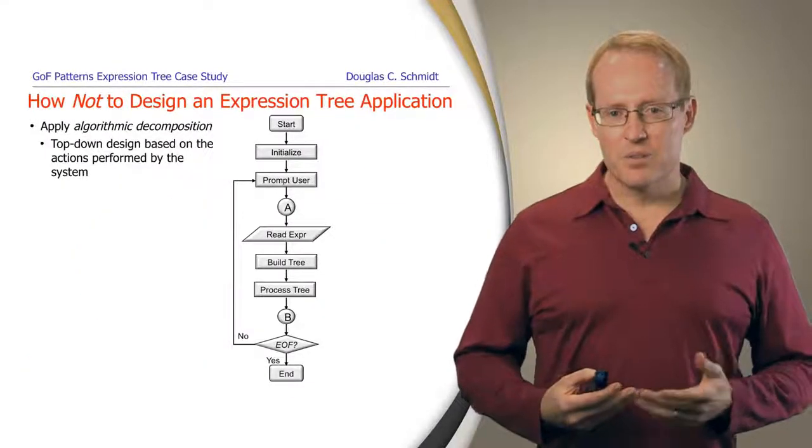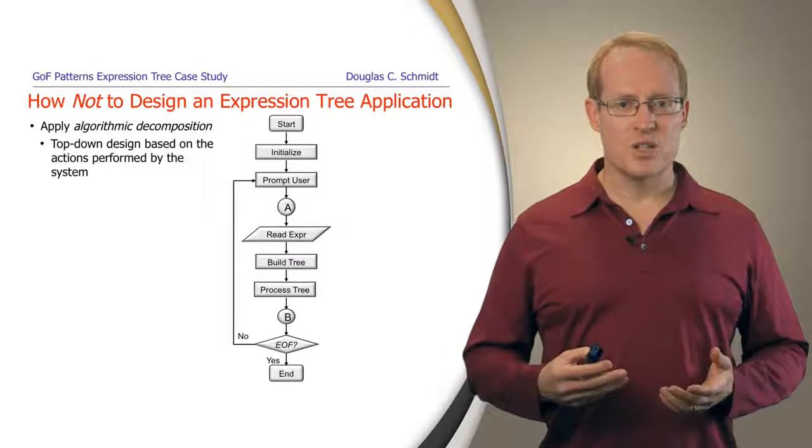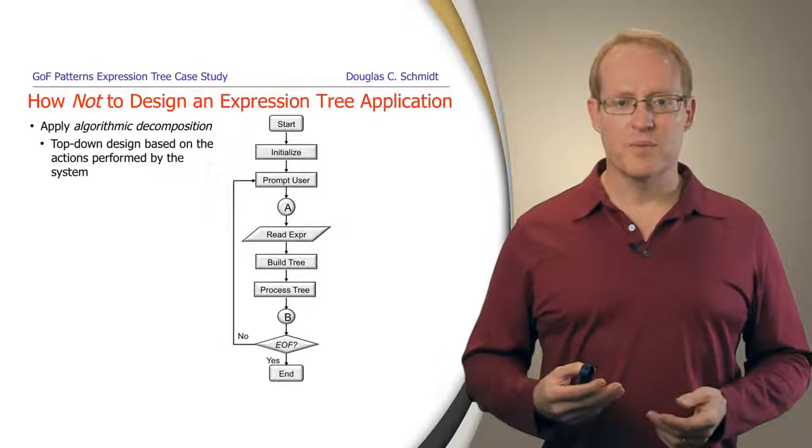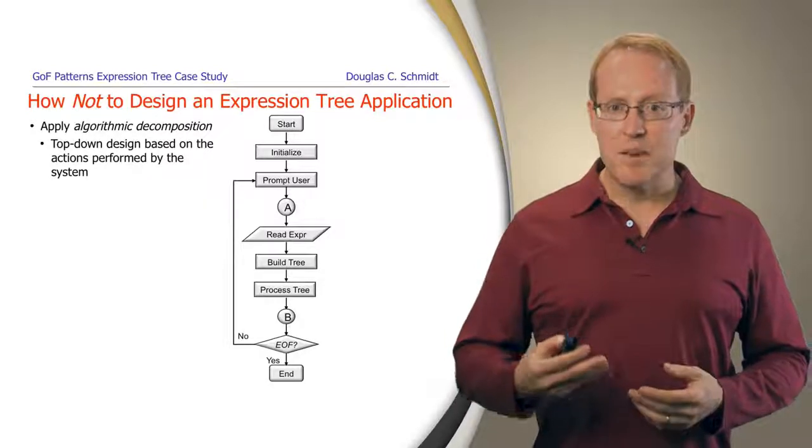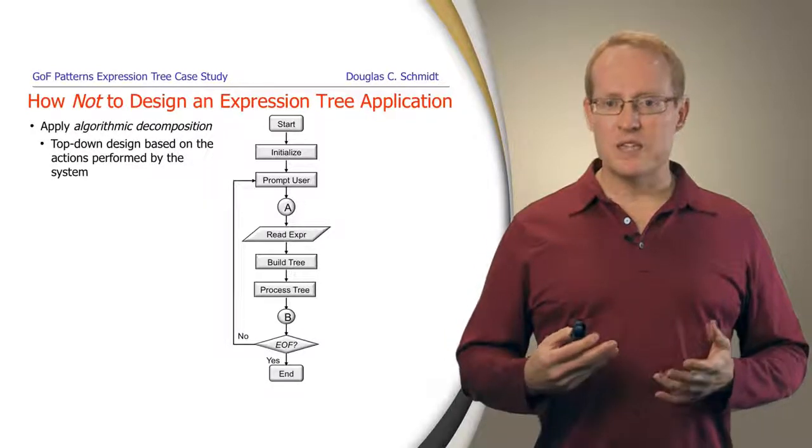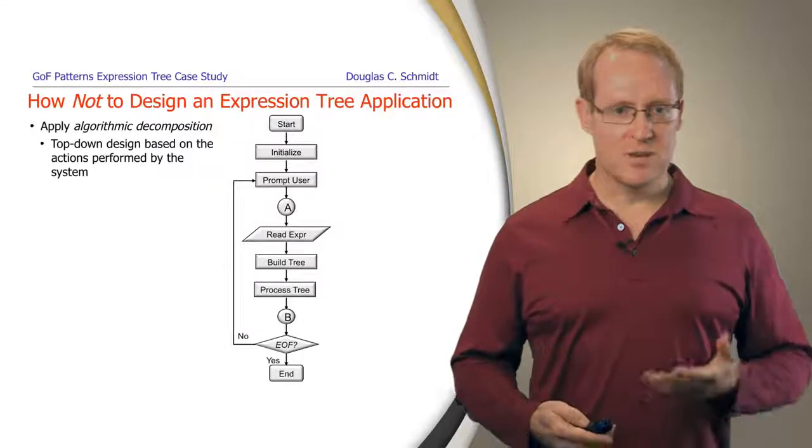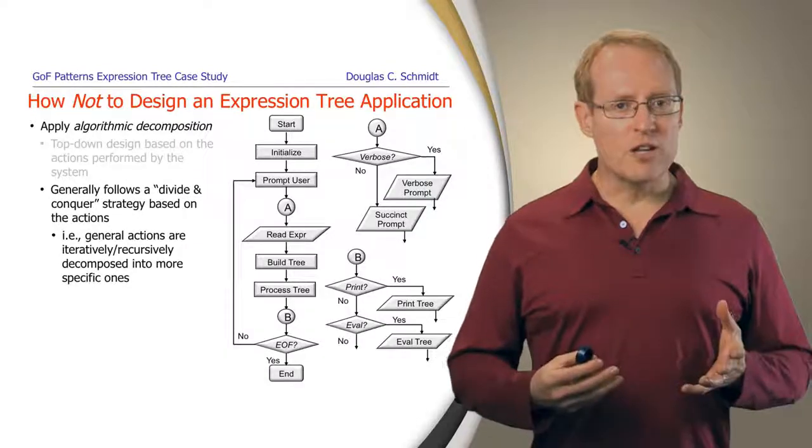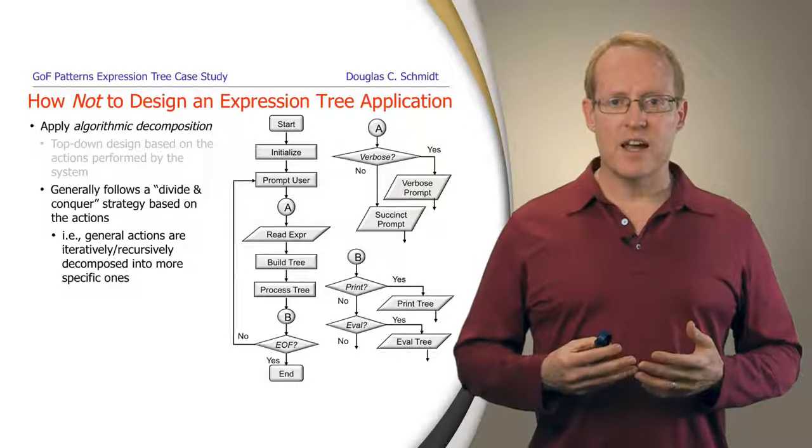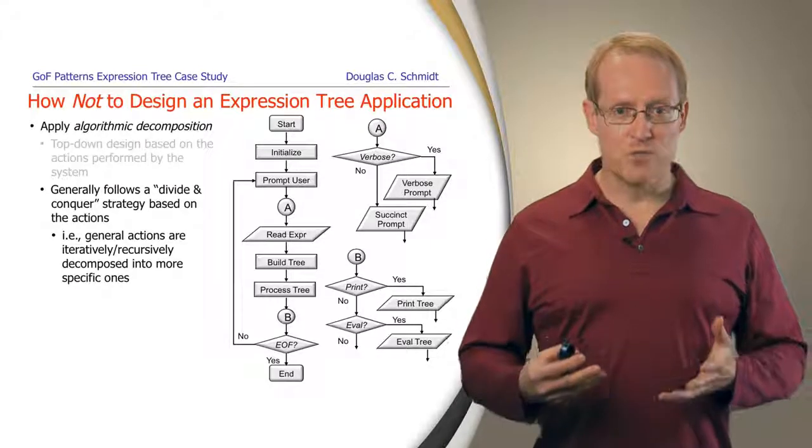So let's first start talking about what not to do, how not to design an algorithmic decomposition for our expression tree application. An algorithmic decomposition is essentially a top-down design that's based on the actions performed by the system. We can represent these in some kind of flow chart or control flow or data flow chart. Generally, the way in which this type of decomposition works is to follow a divide-and-conquer strategy based on the actions performed.